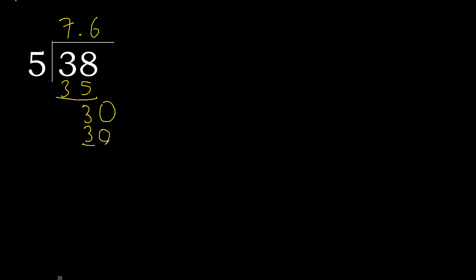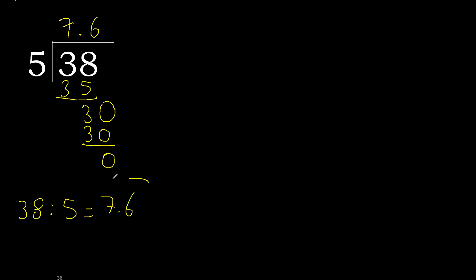30 is not greater. 30 minus 30 is 0. Remainder is 0, therefore finished. 38 divided by 5 is 7.6.